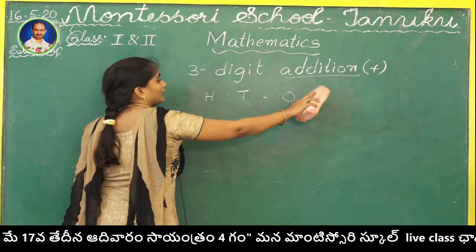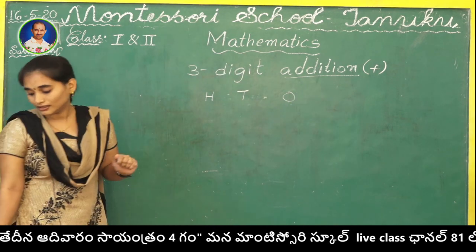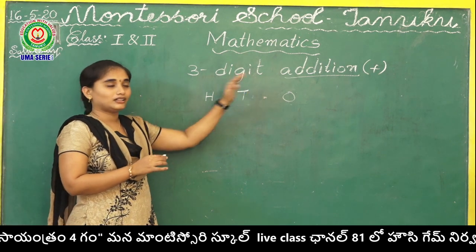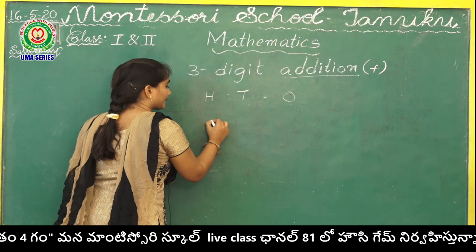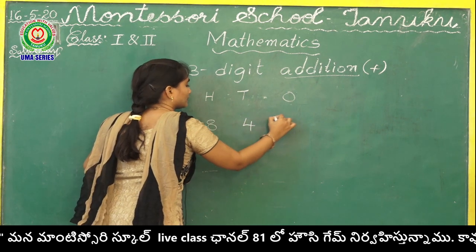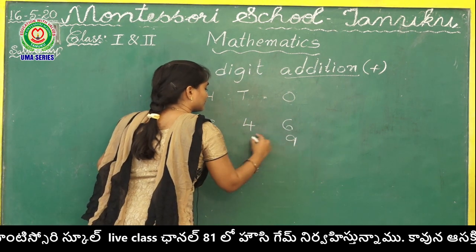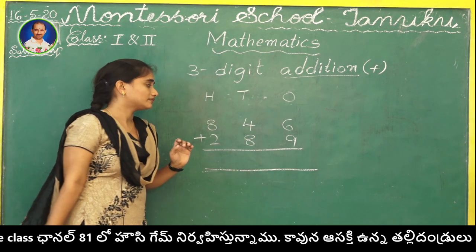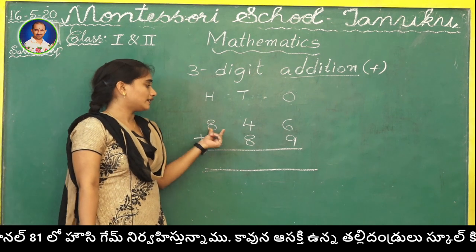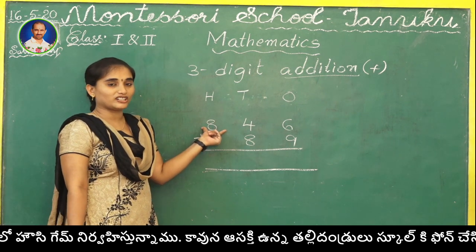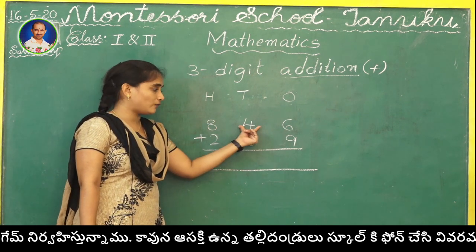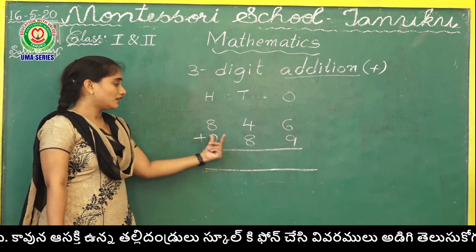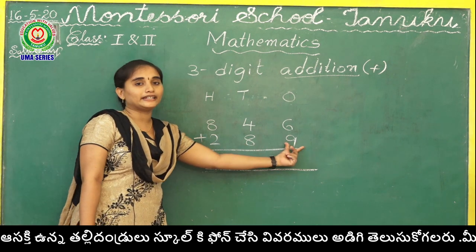Now, we have seen a simple addition. Let's see about carrying in 3-digit addition. See here. Again, first read the question: 846 plus 289.